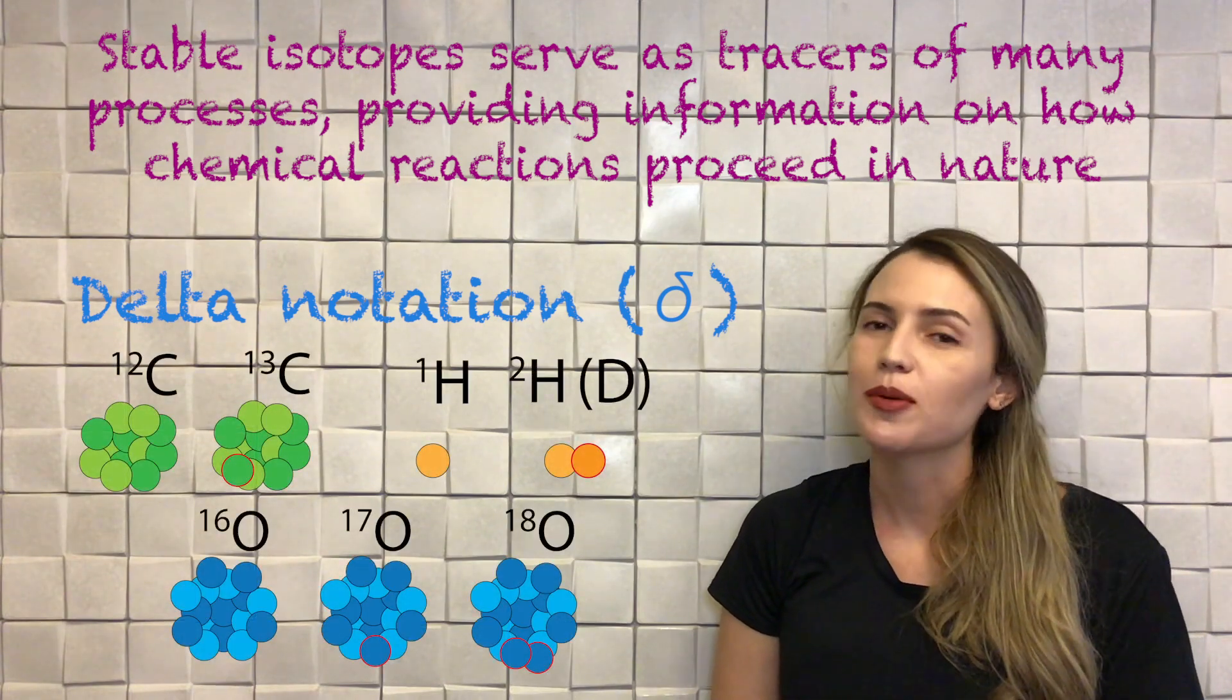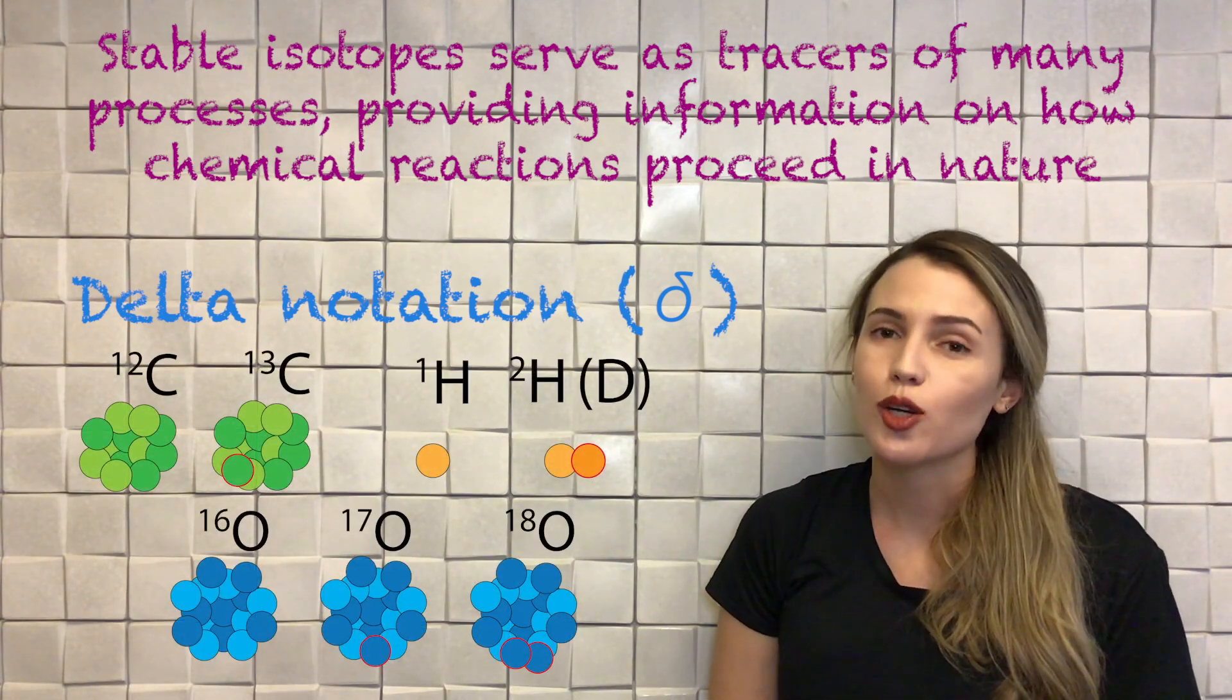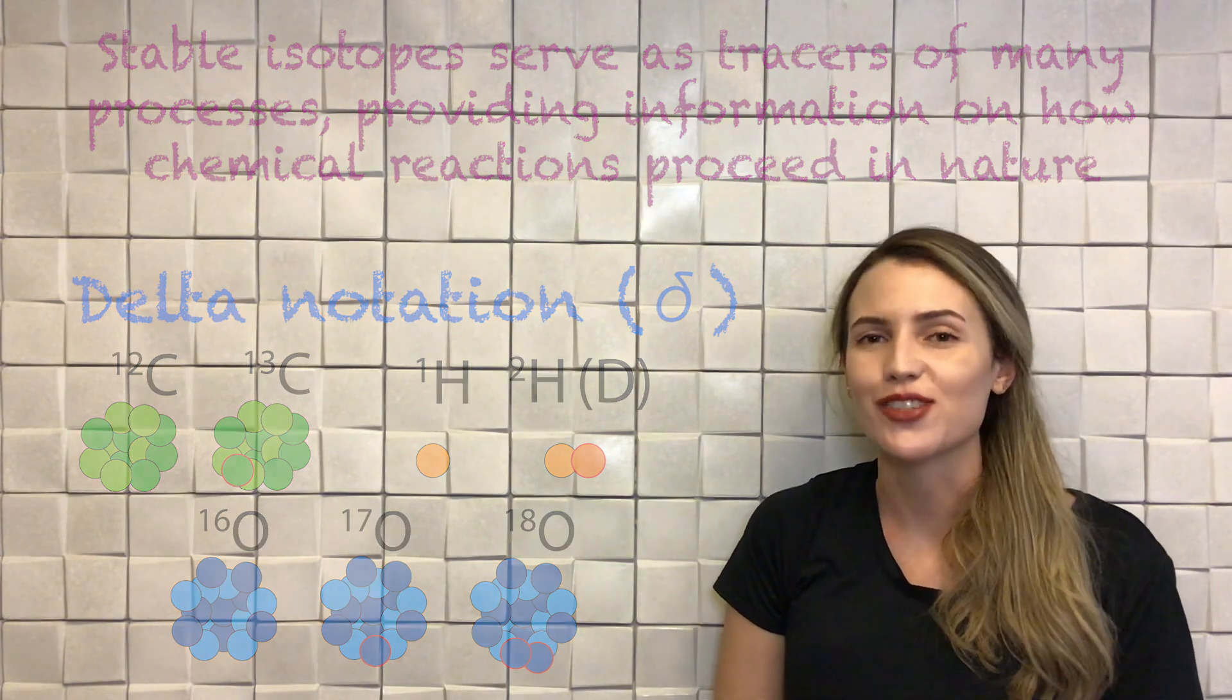Today, we will talk about the delta notation using as examples the isotopes of oxygen, carbon, and hydrogen.